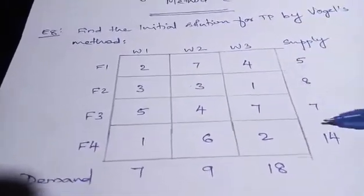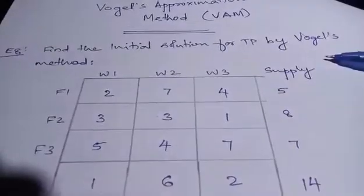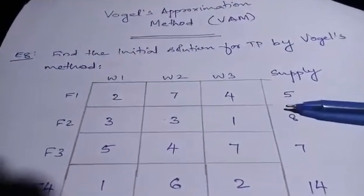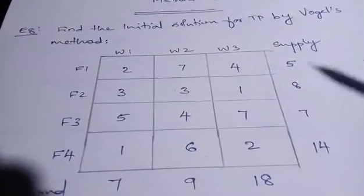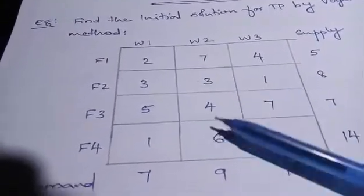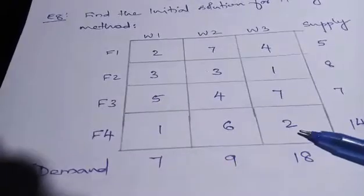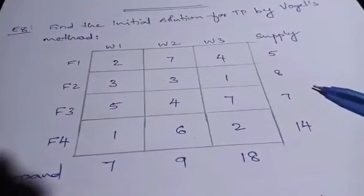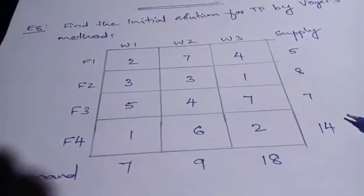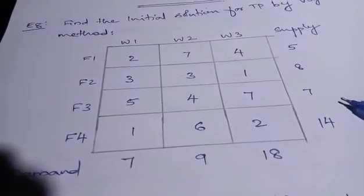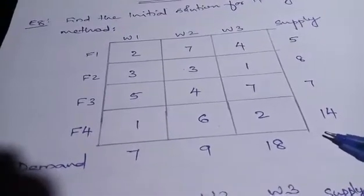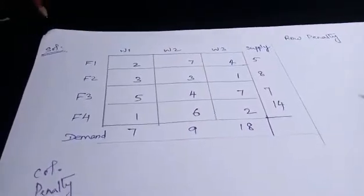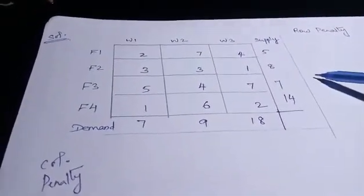Suppose this is the example given: find the initial solution for the transportation problem by Vogel's method. The cost values are 2, 7, 4; 3, 3, 1; 5, 4, 7; 1, 6, 2. Demand is 7, 9, 18 and supply is 5, 8, 7, 14. You have to check whether this is balanced or not.